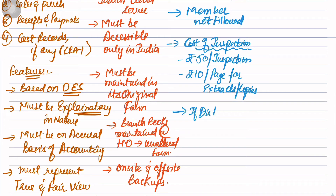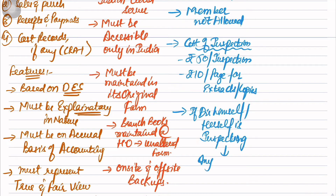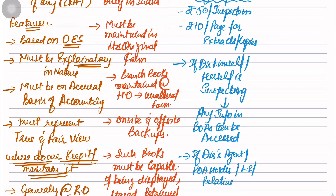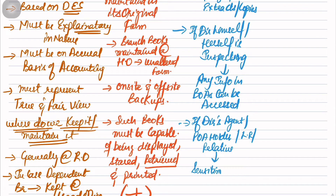So write: if the director himself or herself is inspecting, then any information in Books of Accounts can be accessed. But if it is the director's agent, power of attorney holder, legal representative, or relative - then sensitive Books of Accounts information shall not be allowed to be accessed, because that should not be disclosed outside.